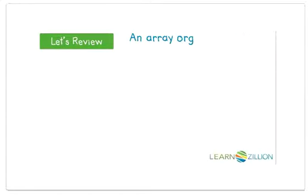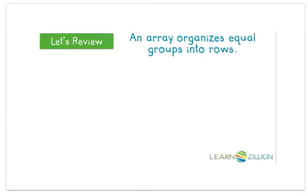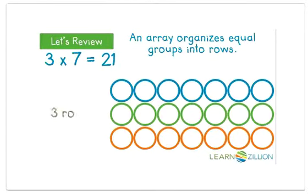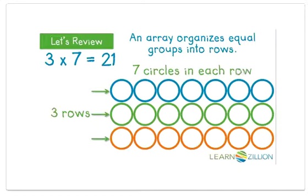We also know that an array is an arrangement of equal groups. Each group is in its own row. The rows go across the array. This array has three rows with seven circles in each row. The array shows three times seven.